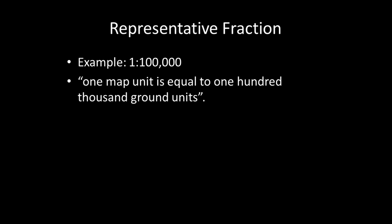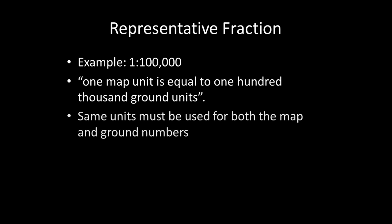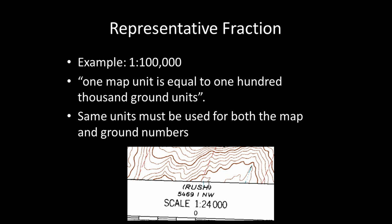A representative fraction such as 1 to 100,000 is interpreted as 1 map unit is equal to 100,000 ground units. When applying specific units to a representative fraction, the same units must be used for both the map and ground numbers. For example, 1 inch on the map equals 100,000 inches on the ground. Here you can see a representative fraction scale shown on a USGS quad map.